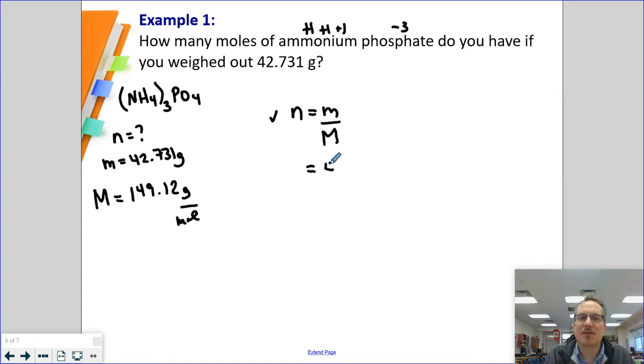I'm going to substitute in 42.731 grams divided by 149.12 grams per mole. If you watch, grams on top, grams on bottom will cancel. So my answer in moles is going to come out in moles, which makes sense.